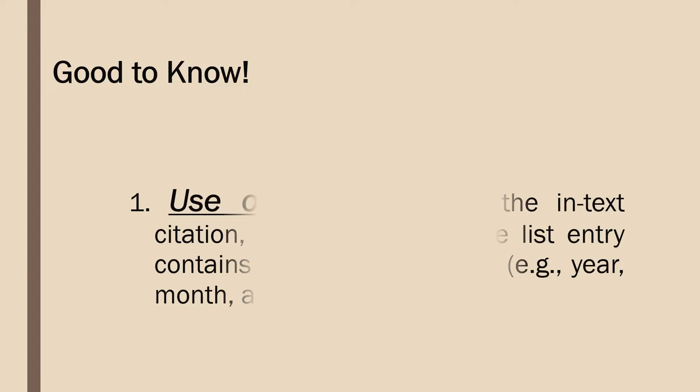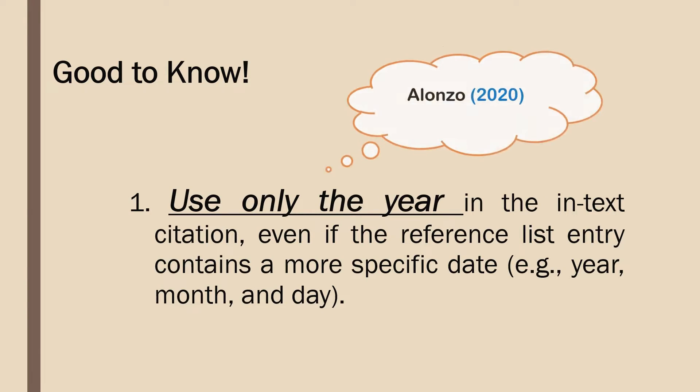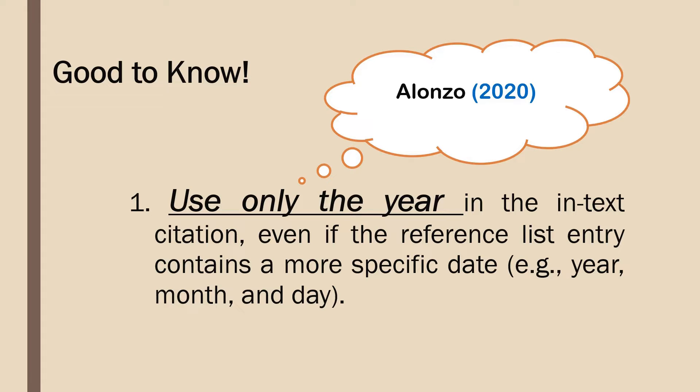Before I discuss the basic rules in the author-date citation system, here are the five things that you should know about in-text citation of APA style. Number one: use only the year in the in-text citation, even if the reference list entry contains a more specific date like year, month, and day.